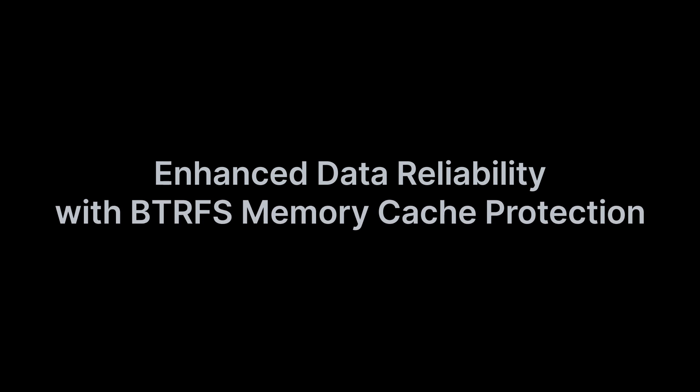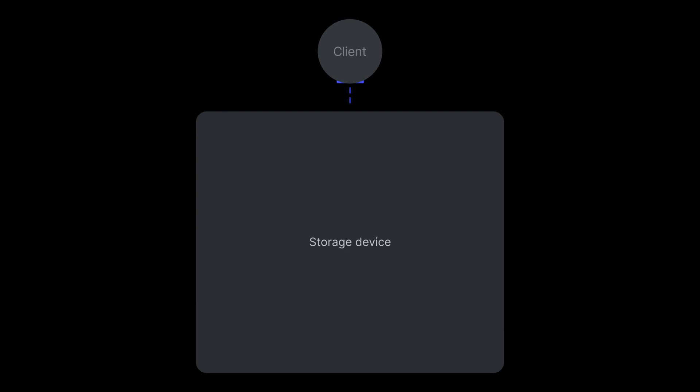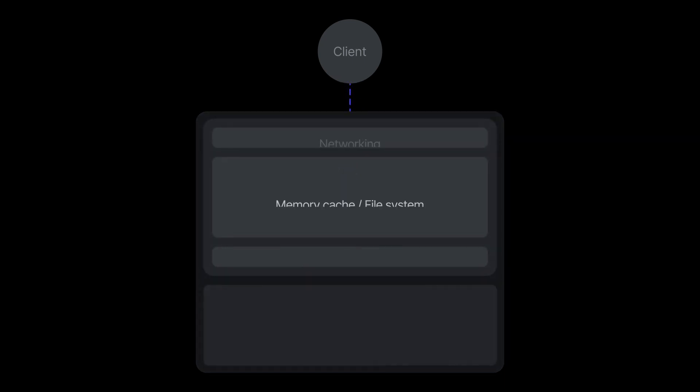SHA in DSM 7 is much faster and gives you a simple, cost-effective option to maximize availability for all services running on your Synology solution. For our dual-controller lineup, we're introducing enhanced data reliability with BTRFS memory cache protection. When you write data to a storage device, there are multiple stages it travels through before it is actually committed to the storage medium, whether it is a hard drive or SSD — due to caching, which happens everywhere.